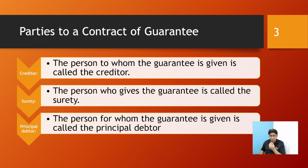There are three parties to a contract of guarantee. One is called the debtor, another is called the creditor, and there is one more called the guarantor, which is known as surety in legal language.